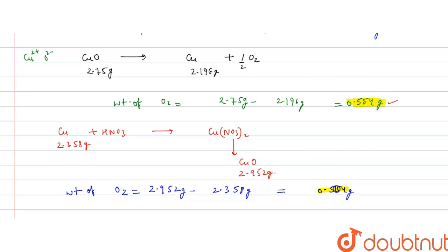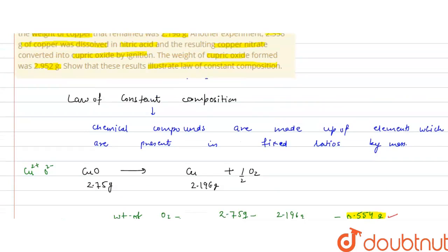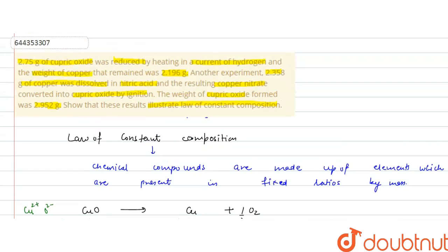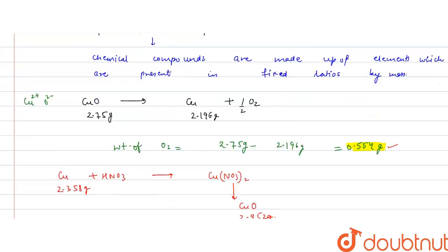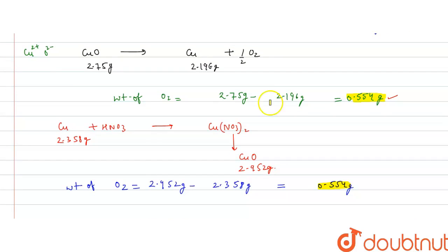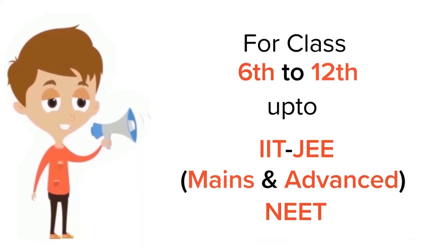The ratio is fixed for the oxygen present in cupric oxide, irrespective of the method by which it has been formed. This illustrates the law of constant composition: chemical compounds are made up of elements present in fixed ratio by mass, and this ratio does not depend on the method of formation of the compound. The weight of oxygen formed is the same in both experiments, which illustrates the law. I hope you understood it — thank you.